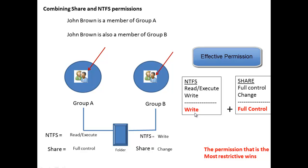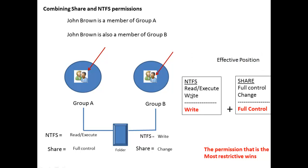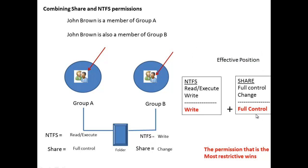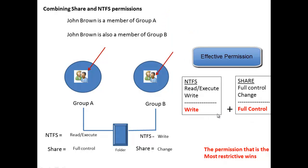So the rule of thumb is: if you are combining share and NTFS permissions, the most restrictive permission wins. If you're only looking at NTFS permissions, the least restrictive wins. If you're only looking at share permissions, the least restrictive wins. Once you get the results of both, you add them together and choose the most restrictive. That is the rule for combining share and NTFS permissions.